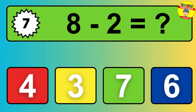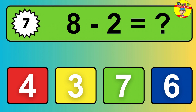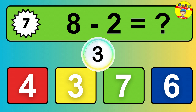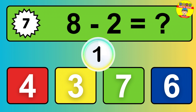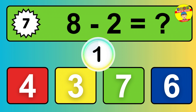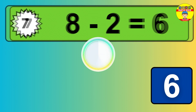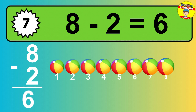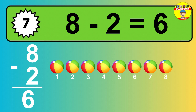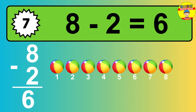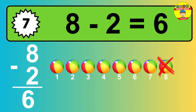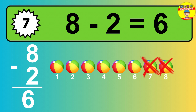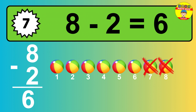Question seven: eight minus two equals what? So the answer is, eight minus two is six. Let's count it. One, two, three, four, five, six.